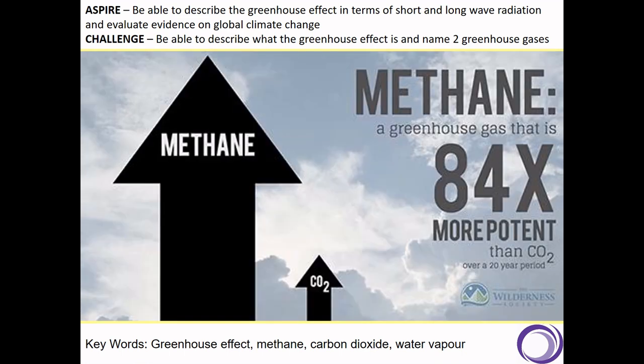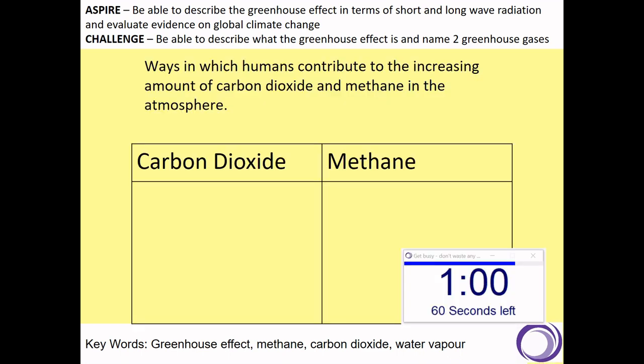It's worth saying that methane as a greenhouse gas is actually 84 times more potent than carbon dioxide over a 20-year period, which means it causes more of that longwave radiation to be absorbed and has a higher warming effect. The difference is that actually more carbon dioxide is emitted into the atmosphere, so that offsets this difference slightly.